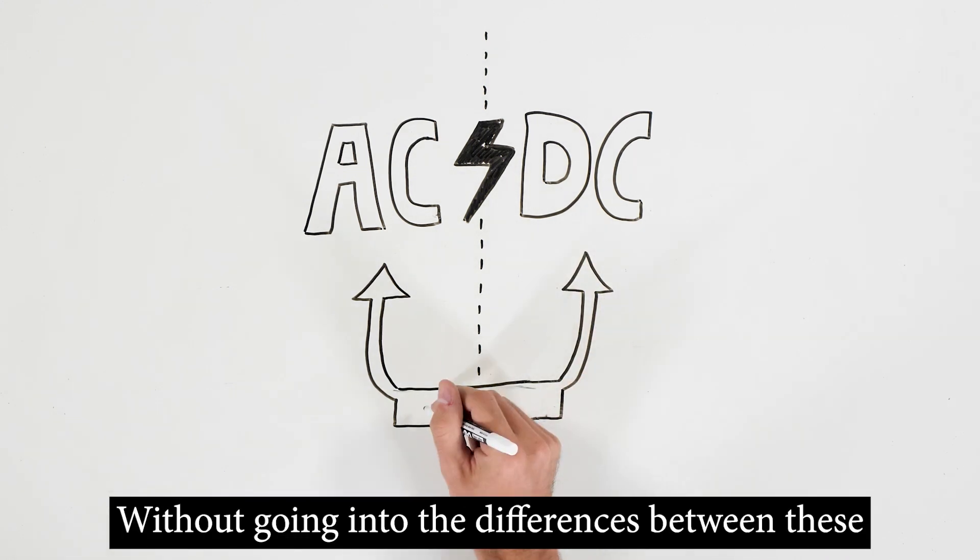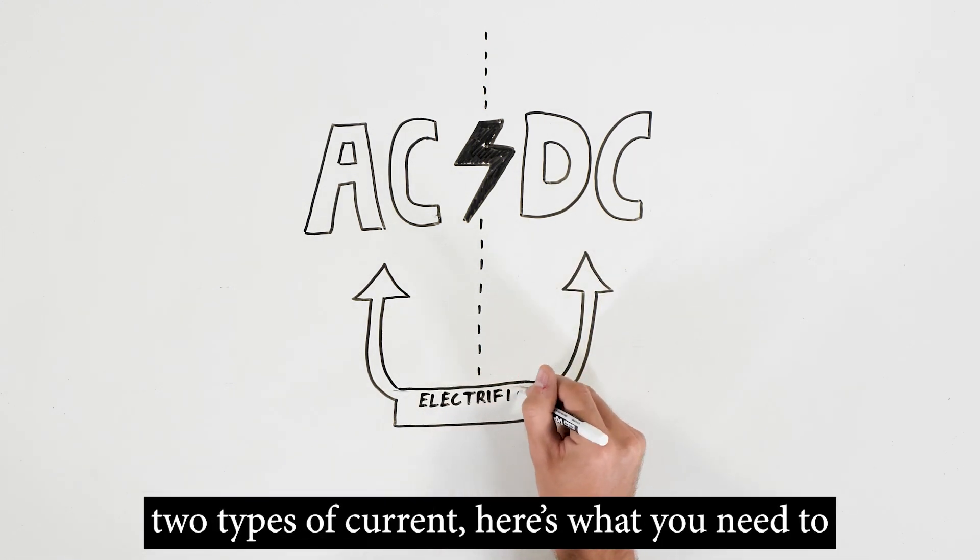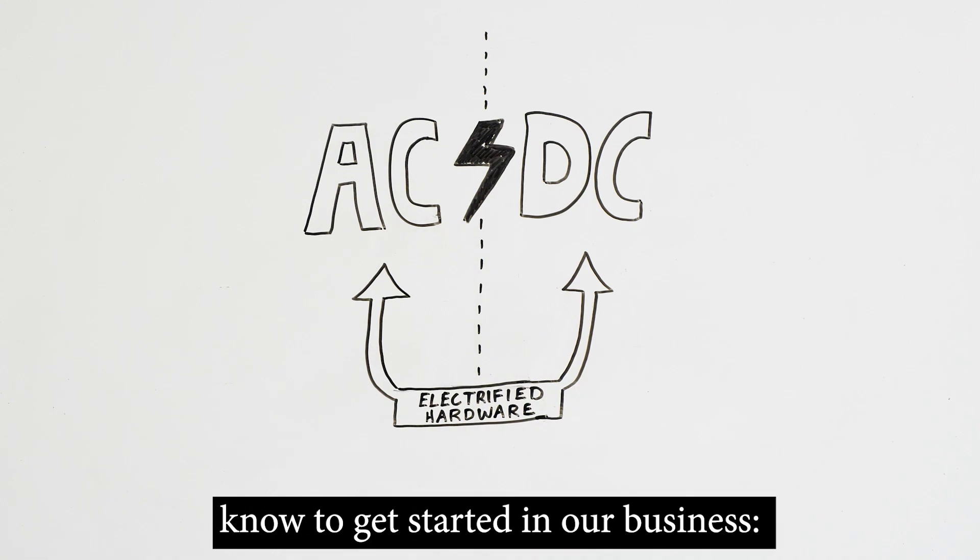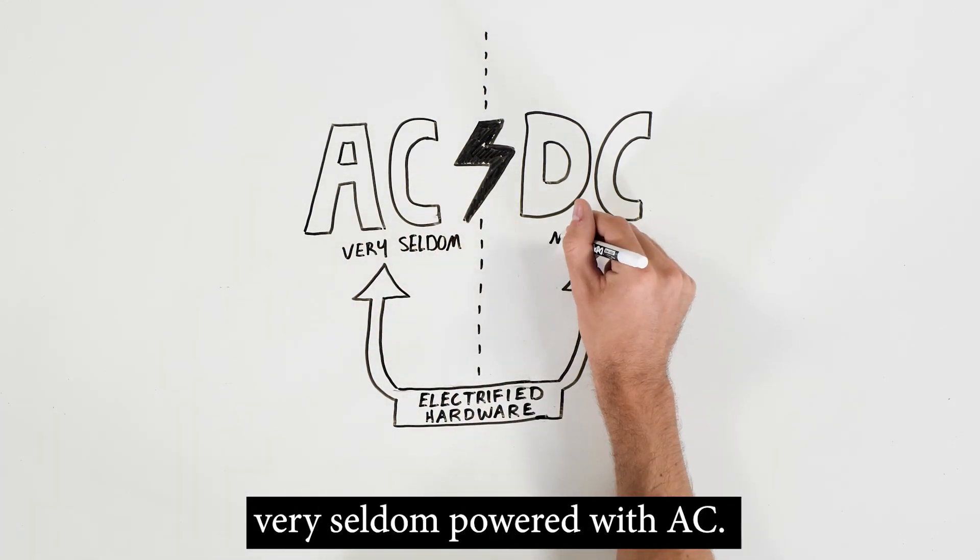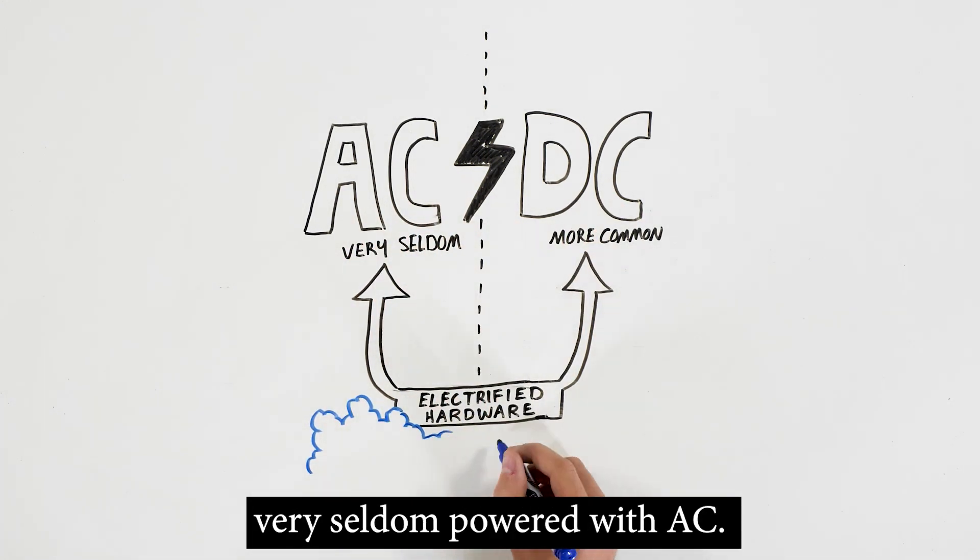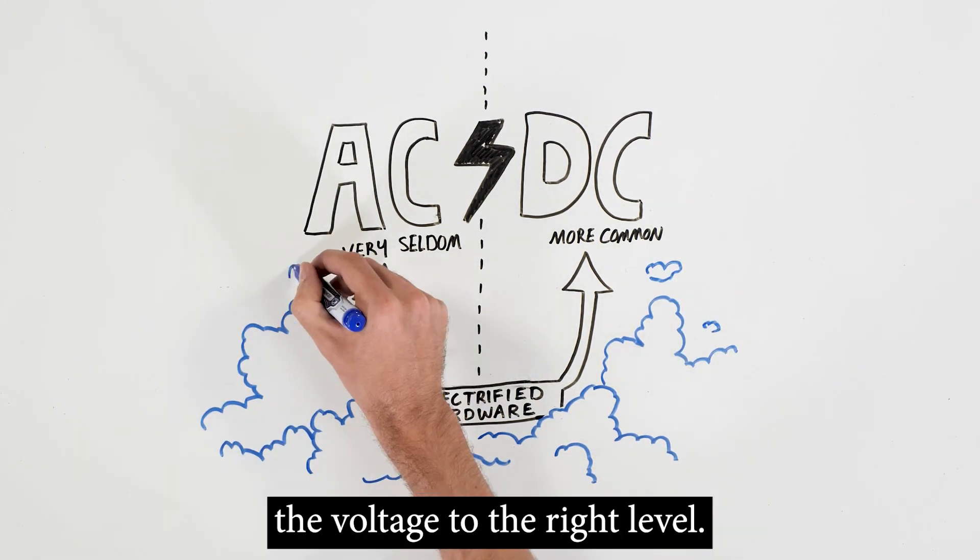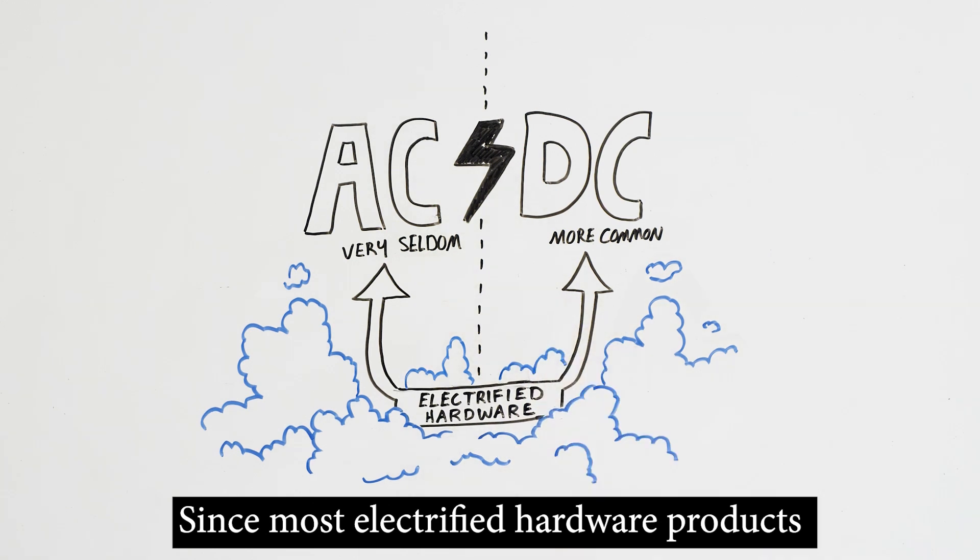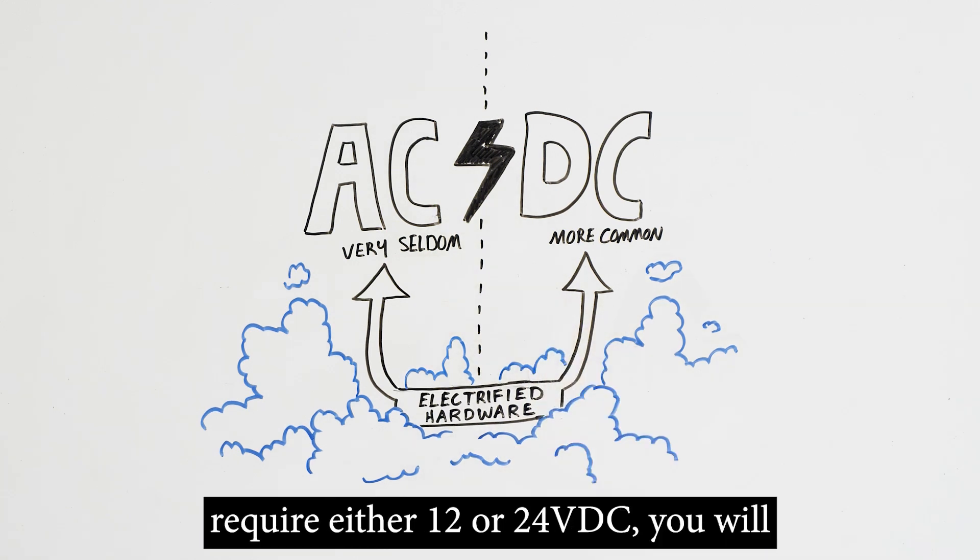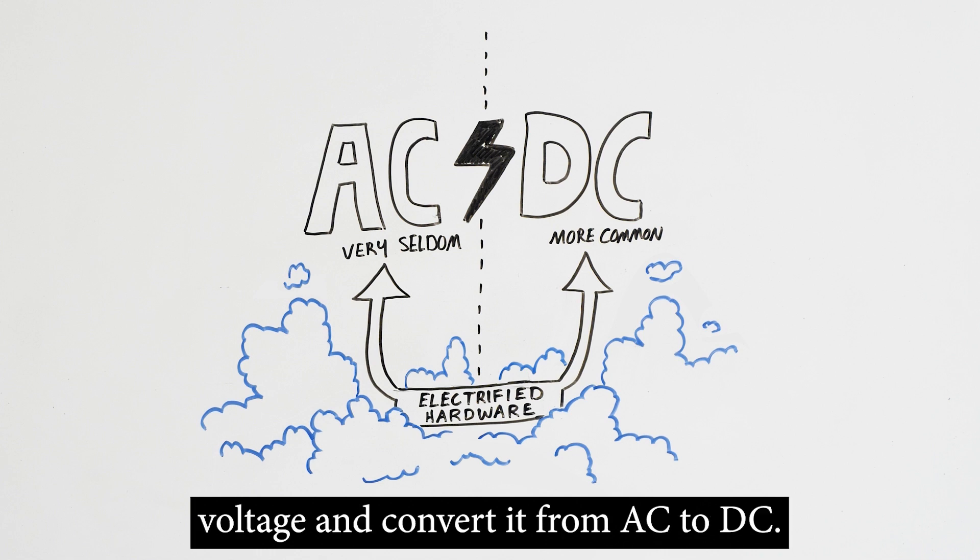Without going into the differences between these two types of current, here's what you need to know to get started in our business. Today, electrified hardware is very seldom powered with AC. For those times when it is, you can use a transformer to step down the voltage to the right level. Since most electrified hardware products require either 12 or 24 volts DC, you will use a power supply to both lower the voltage and convert it from AC to DC.